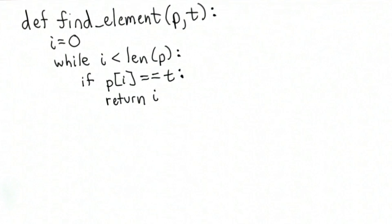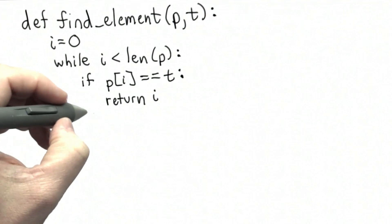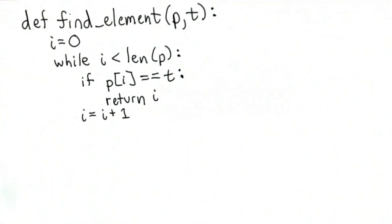Unless the first element matched, in which case we return 0, the loop would just keep going on forever, again checking the first element. So we need to increase the value of i, and that's the end of the while block.